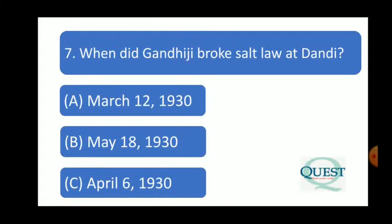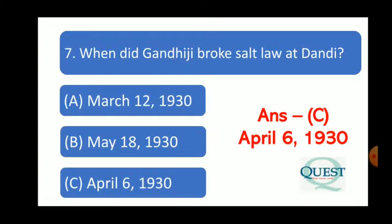Question 7: When did Gandhiji break the salt law at Dandi? The answer is April 6, 1930. Gandhiji started the Dandi March from Sabarmati on 12th March 1930, reached Dandi on 6th April 1930, and broke the salt law.